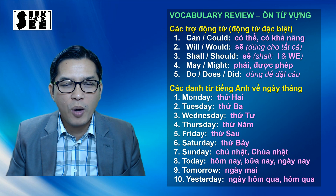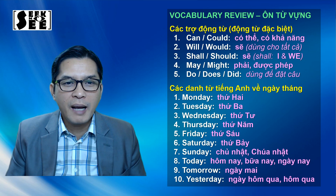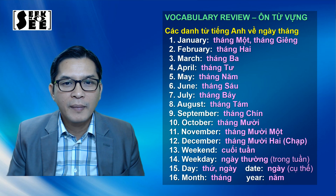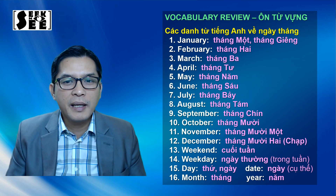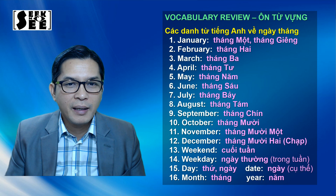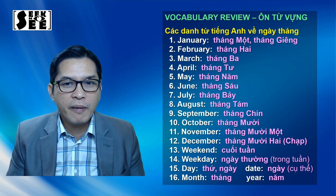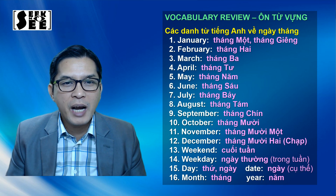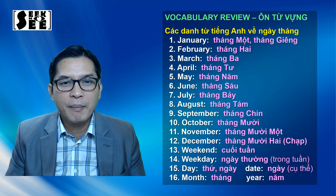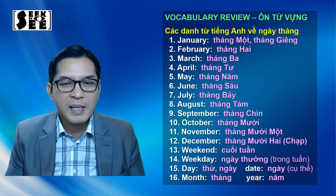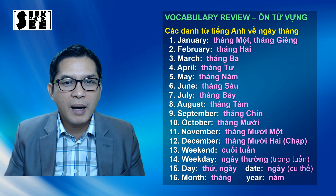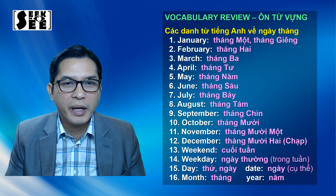Bây giờ chúng ta bước sang phần ôn tập các tháng ở trong năm. Chúng ta có tháng Giêng hay là tháng 1: January. Chúng ta sẽ thấy có 2 cách phát âm cái phần vần cuối - có 1 số người họ phát âm làm âm E dài (E-A-R-I), có 1 số người thì họ sẽ phát âm làm âm Ơ (Ơ-R-I). January hoặc January. Tháng 2: February. Cái âm này sẽ có 1 số người bị nhầm và không đọc cái âm V - chúng ta nhớ có âm V ở đây, là 2 môi chúng ta khép lại. February.